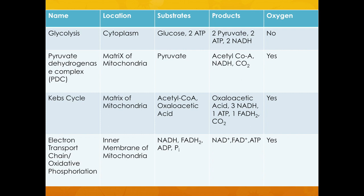It's important to know where each event happens, the substrates involved, the products yielded, and whether it's aerobic or anaerobic. Glycolysis happens in the cytoplasm; substrates are glucose and two ATPs; products are two pyruvates, two ATP, and two NADH; and no oxygen is required. PDC happens in the matrix of the mitochondria; the substrate is pyruvate; products are acetyl coenzyme A, NADH, and carbon dioxide; and oxygen is required.